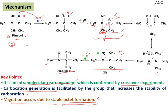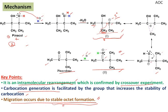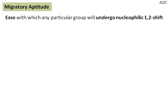Now before we come to migratory aptitude: if you are only interested in what pinacol and pinacolone are and what the mechanism is, this video is enough for you. But if you want to answer questions like — if instead of methyl I change it to phenyl, which of the two will get migrated — that should be your question. Such questions will be answered by knowing what migratory aptitude is. Migratory aptitude is the ease with which any particular group will undergo a nucleophilic 1,2-shift — a group from carbon number one goes to carbon number two.